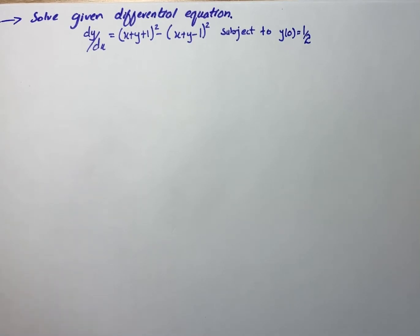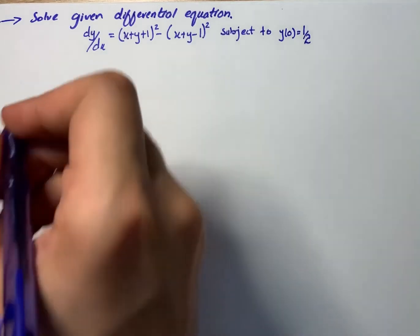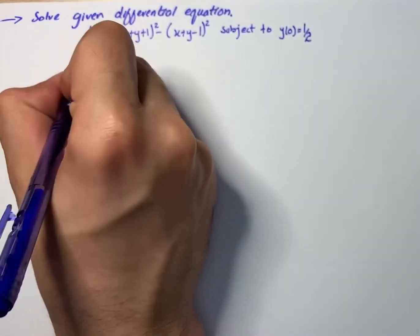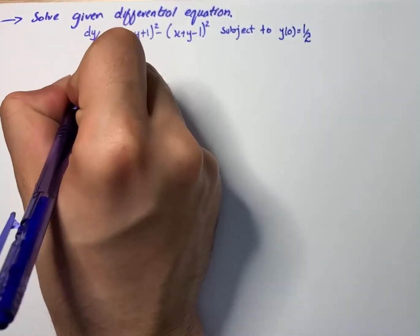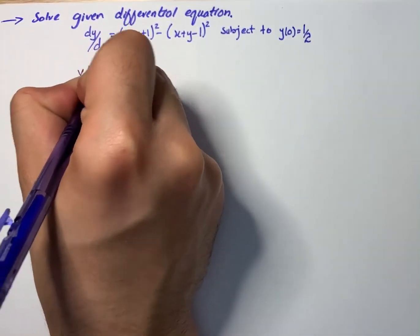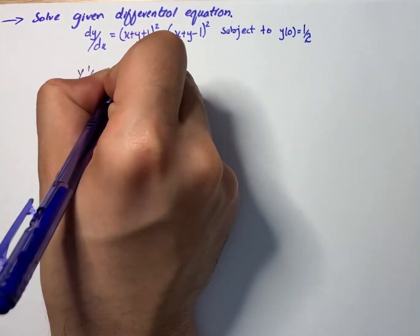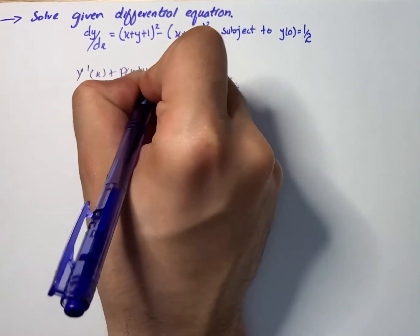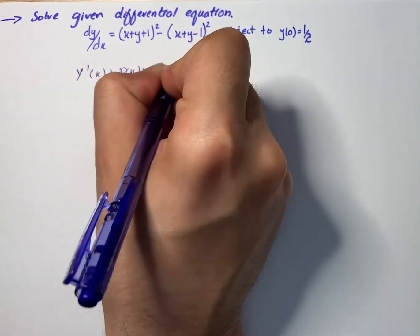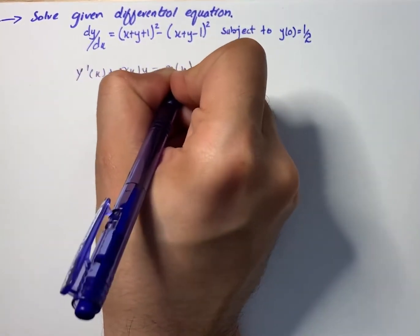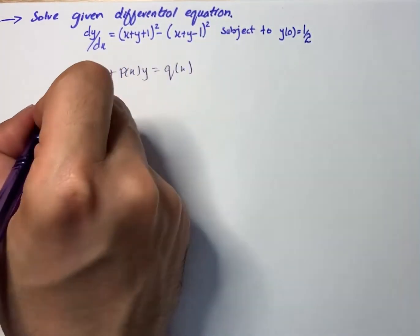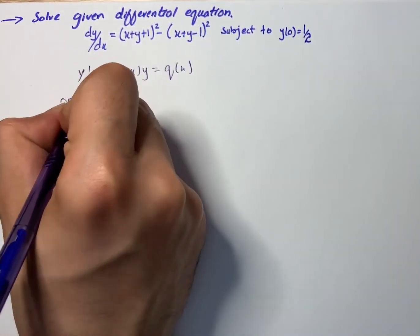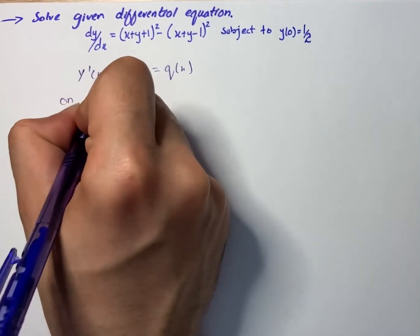The first order linear ordinary differential equation has the form y'(x) plus P(x) times y equals Q(x). So on substituting...